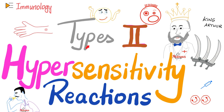In the last video, we started talking about type 1 hypersensitivity reactions, which is the fastest — that's why we call it immediate type hypersensitivity reaction. But today, we will turn our attention to type 2 hypersensitivity reaction, which is cytotoxic — toxic to the cell.